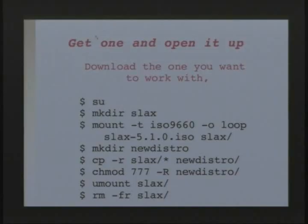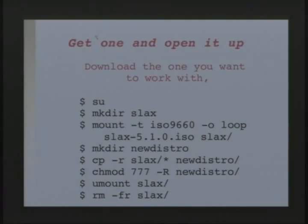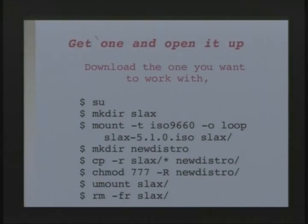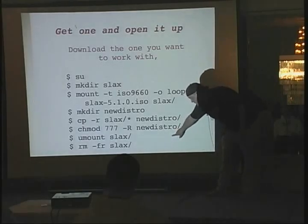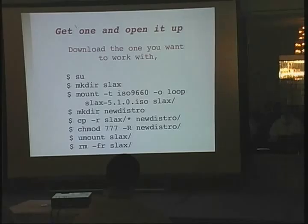If you want to edit Slax, download it. SU means switch to super user. You do this in the directory you're in, then make a directory called Slax. This mount command mounts the Slax ISO into the Slax folder. So when you browse the Slax folder, you're seeing what's exactly on the CD. You can't edit any of this because the CD is still mounted. So we make a directory called 'new distro', copy the stuff from Slax to new distro, change the permissions, then unmount Slax. What you're left with is a directory called new distro.